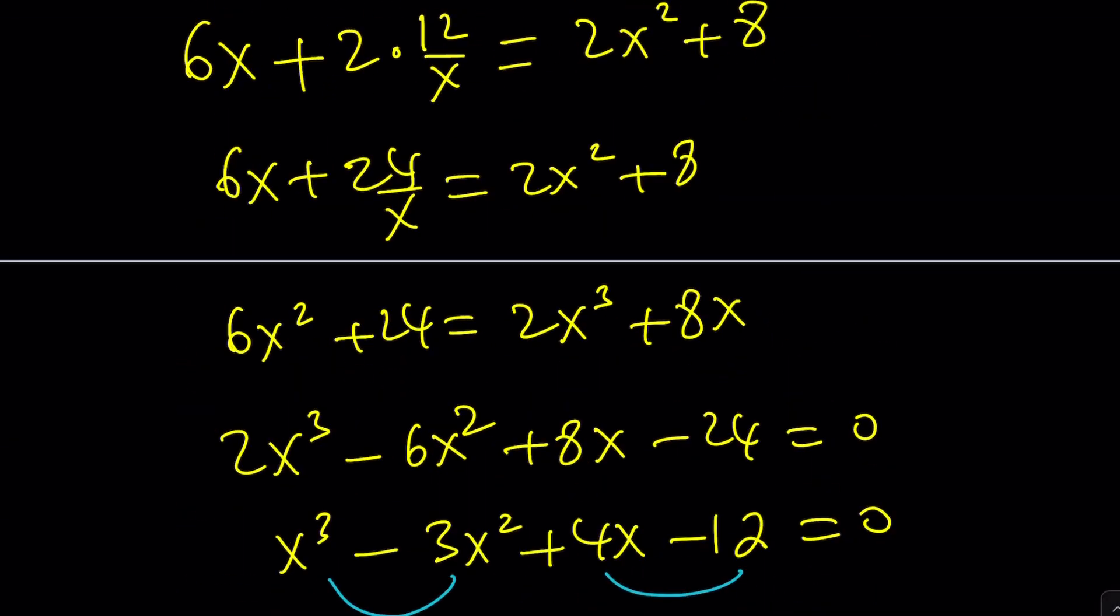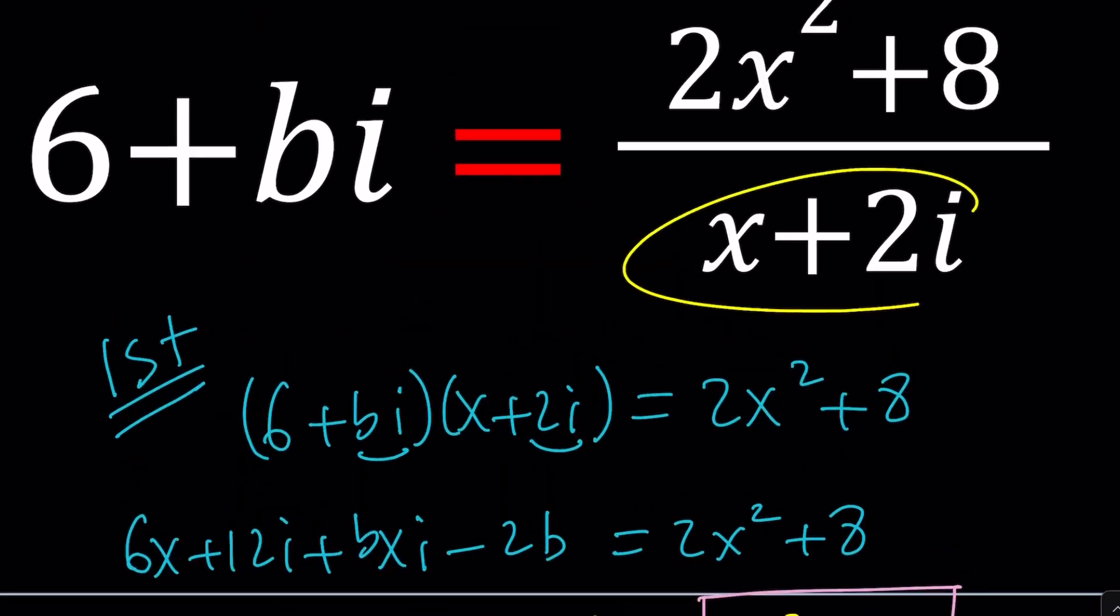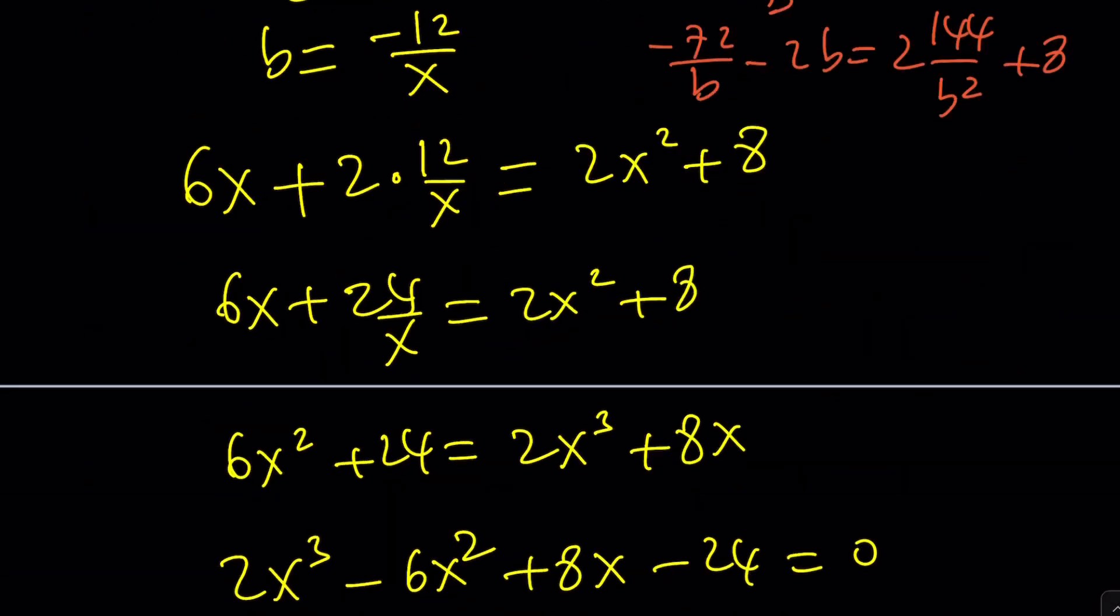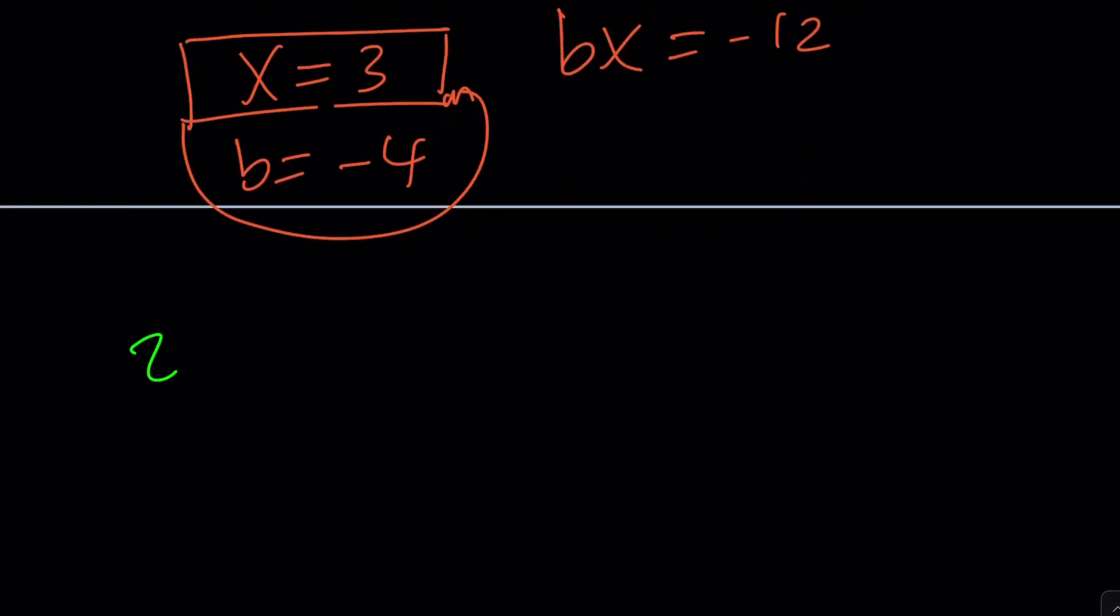But as an alternative, you could multiply by the conjugate, x minus 2i. That way you'll get rid of the fraction or simplify it. That's one way to approach it. And our second method is kind of similar to that.